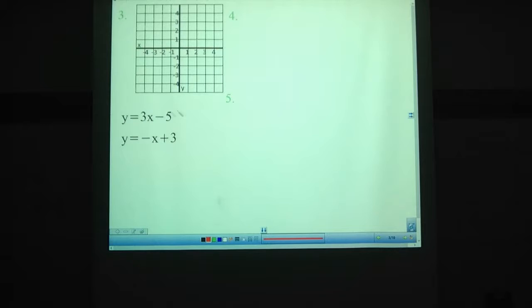And we're back. So 3x - 5, that has a slope of 3 over 1, y-intercept -5. So we start at -5 there and go up 3 to the right 1, up 3, right 1, up 3, right 1.